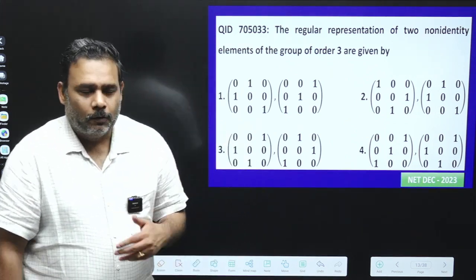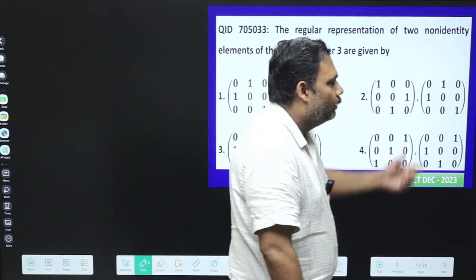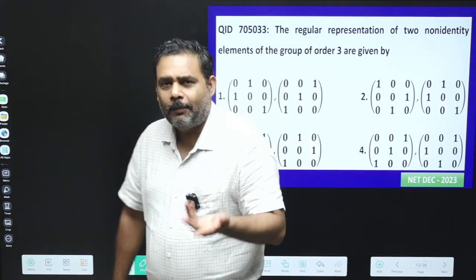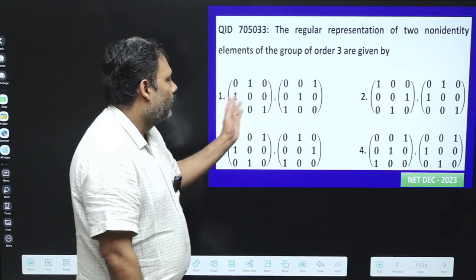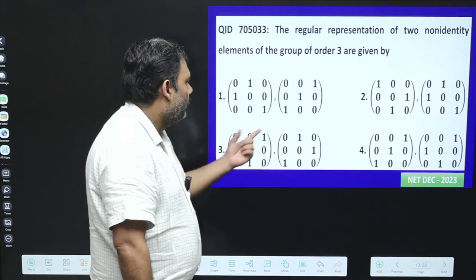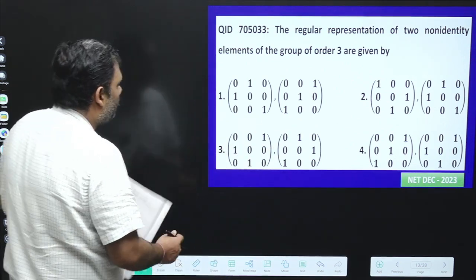So what we have to do, we have to just multiply these two elements, multiply these two elements and we have to check whether they are identity or not. So you can multiply all these things. I am just going for the correct option. So let's try to multiply these two things. This is option number 3.